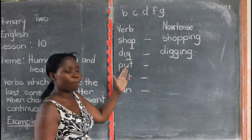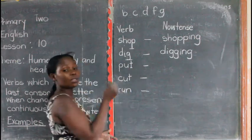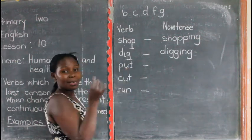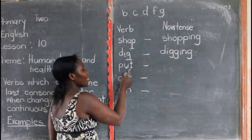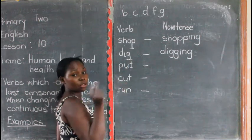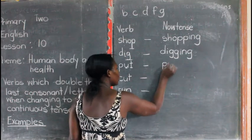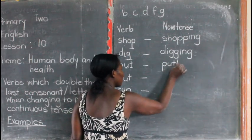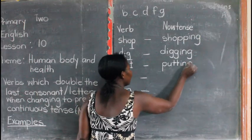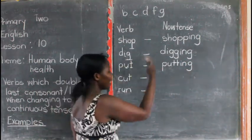Another one — we have 'put.' The letter T is a consonant letter, near one vowel letter. When we are changing it, the last letter should be doubled. Write two T's and add I-N-G. So 'put' becomes 'putting.'